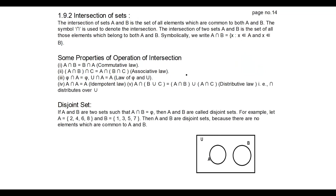1.9.2 is intersection of sets. Intersection means whatever elements are common in both A and B, you take and write them. A intersection B gives the common elements between the two sets. It is represented by an inverted U symbol, and it also obeys commutative property, associative property, law of null set and universal set, distributive property, and idempotent law.